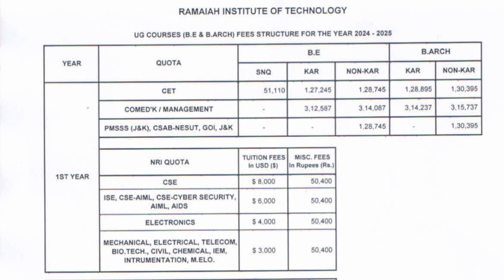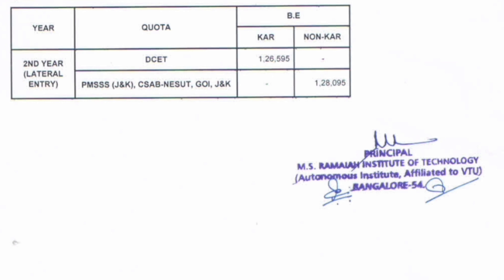Now looking at the bottom table — NRI quota or management quota students will also have to pay 50,000 as miscellaneous fees for CSE branch, Information Science, CSE, AIML and CSE specialization branches — also 50,000. EC and all other branches also carry 50,000 as miscellaneous fees for NRI quota or management quota students. For diploma students getting direct admission to the second year through lateral entry: DCET fees for this year will be 1,28,595 — very similar to KCET. For students coming through the Pradhan Mantri scheme for Jammu & Kashmir or Government of India from outside Karnataka, fees will be 1,28,000.